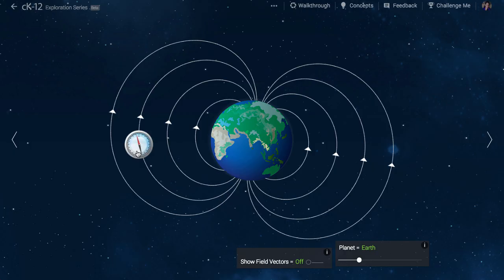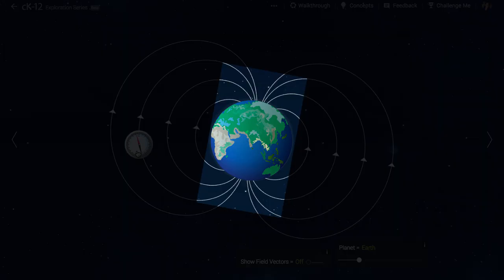The density of the field lines, basically how many are packed into some region of space, tells us about the strength of the field. As you can see, the Earth's magnetic field is strongest near the poles.